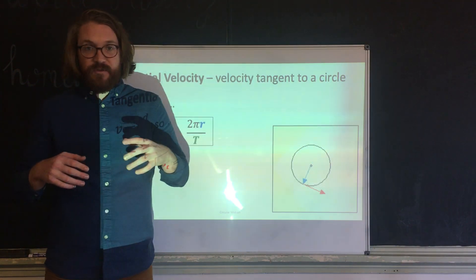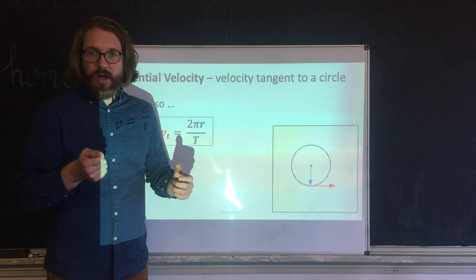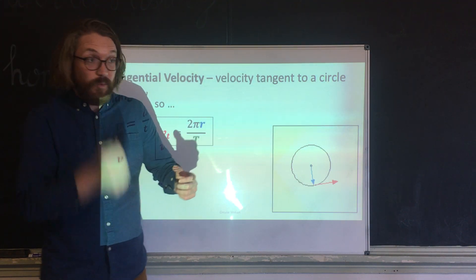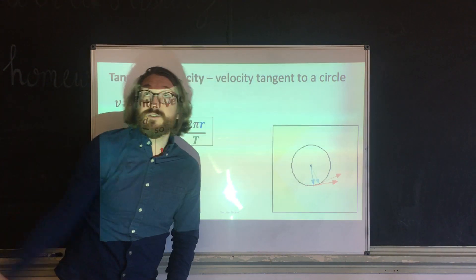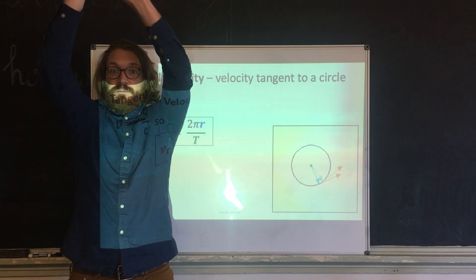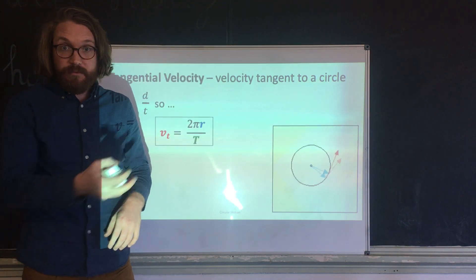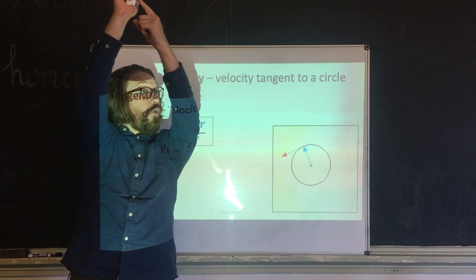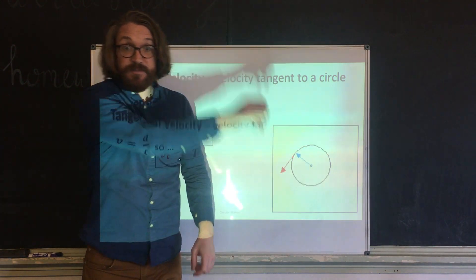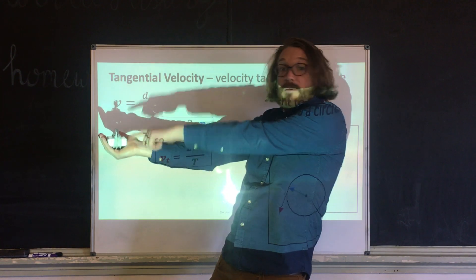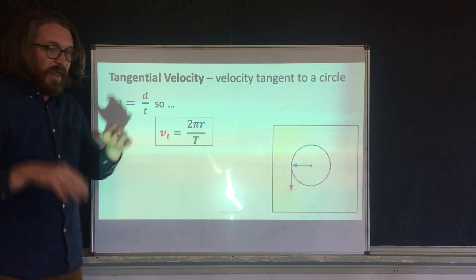Think about an old-school slingshot that you spin around. When you stop, whatever object is on it flies off tangentially from wherever you stopped. If you stop here, it goes forward; stop here, it goes straight down; stop here, it goes straight up. The velocity is always tangent to the circle.